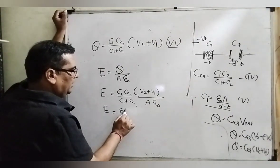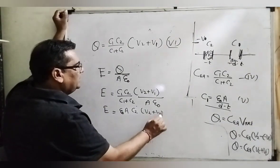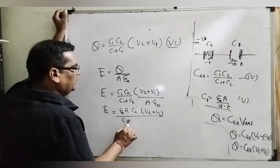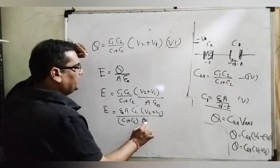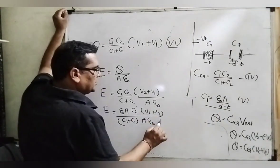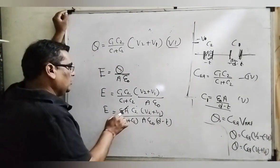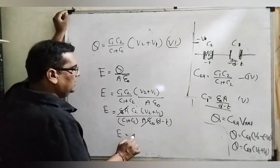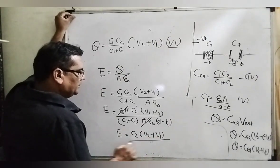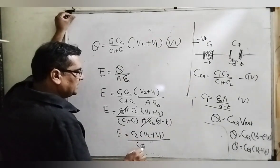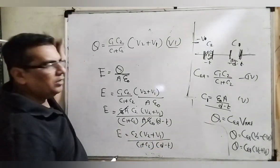Electric field E equal to Q upon A epsilon not. It is the electric field between the parallel plates. So therefore Q by A epsilon not. Now substitute the value of Q. C1 C2 upon C1 plus C2, V2 plus V1, and A epsilon not. Here we already find out the value of C1, substitute this value. Then here is the value of E: C2 into bracket V2 plus V1 upon C1 plus C2 and D minus d. This is the value of E.